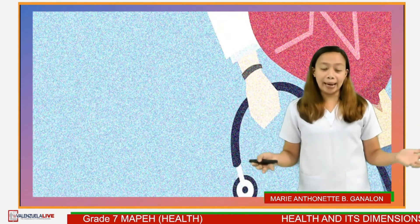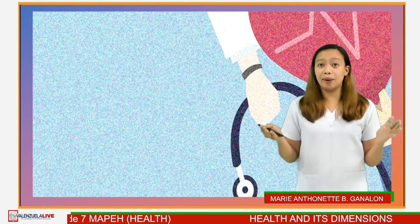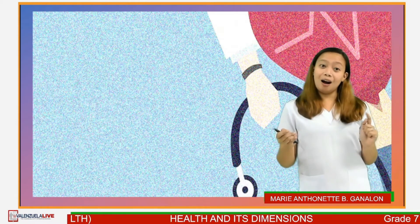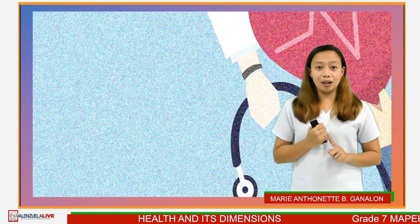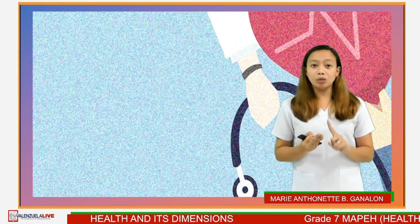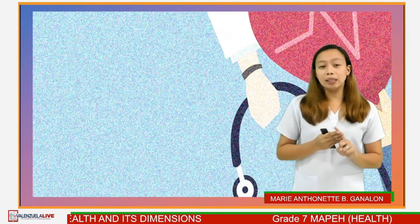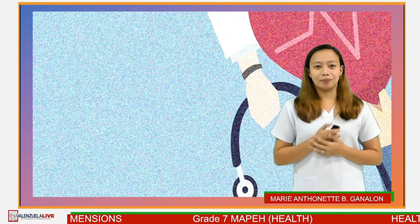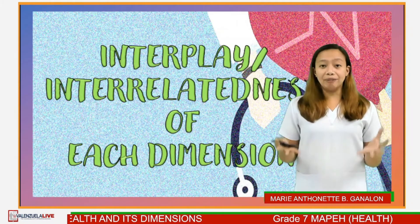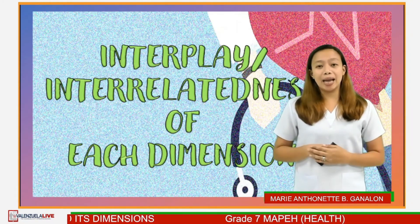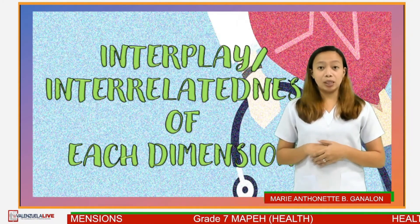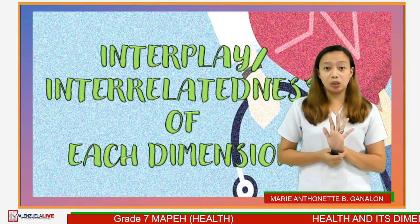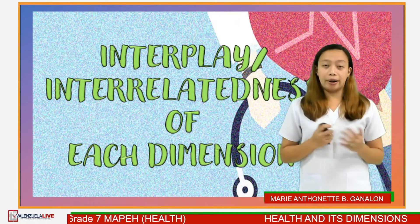There you have it. Again, what are the five dimensions of holistic health? They are physical health, mental health, social health, moral spiritual health, and emotional health. Good job. After learning the five dimensions of holistic health, let us discuss how these dimensions interplay with one another. These five dimensions of holistic health are interrelated.